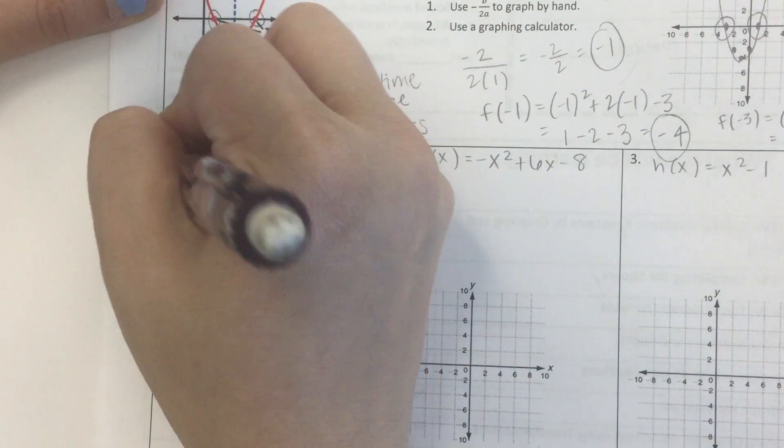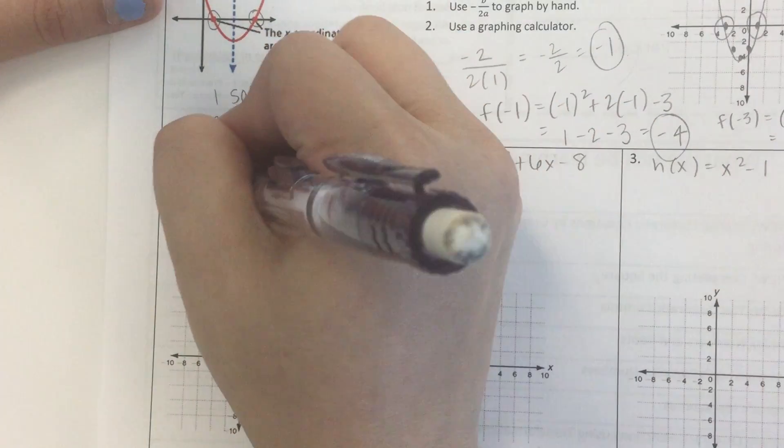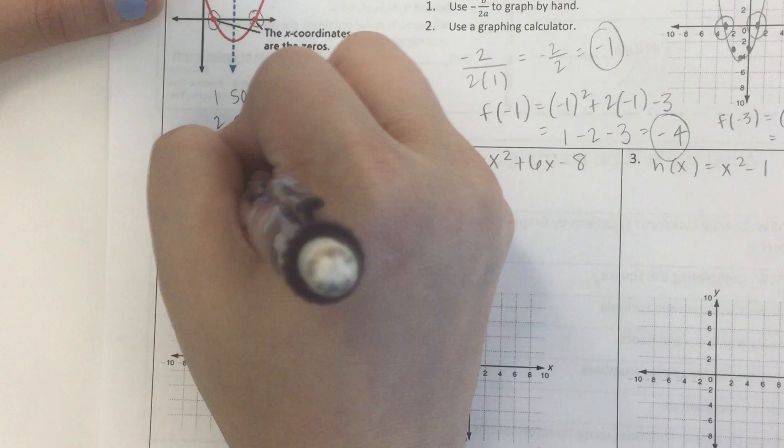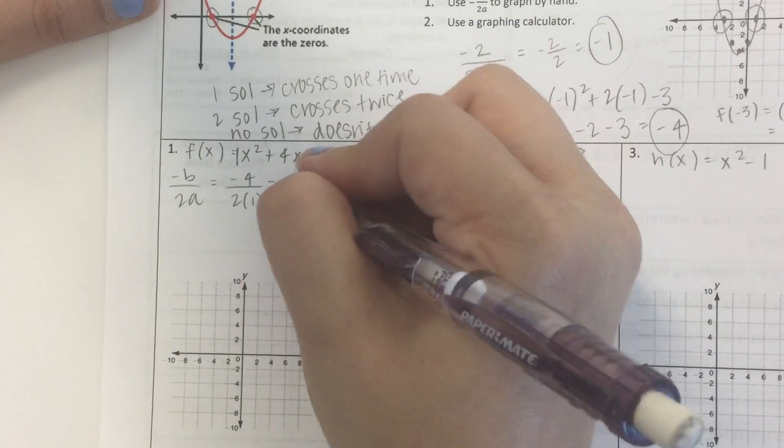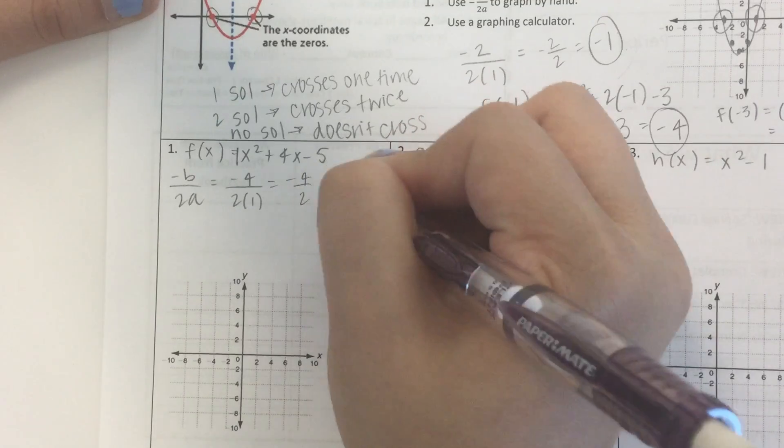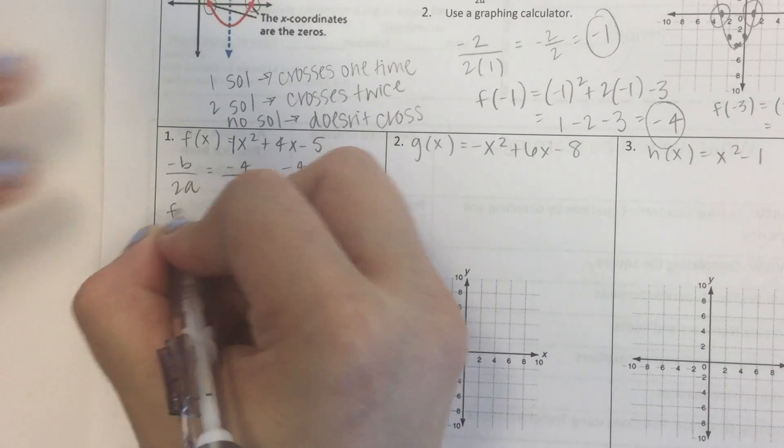So let's figure out our negative b over 2a. Our b is 4, so we're going to go negative 4 over 2 times 1. Since there's no number in front, it's a 1. Negative 4 divided by 2 is negative 2. So we've got a negative 2.